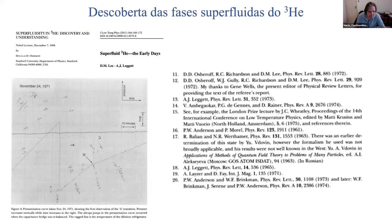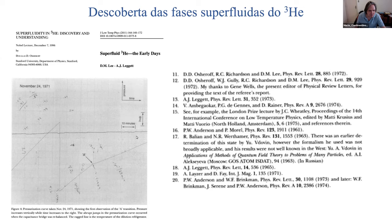Isso aqui é uma medida. A primeira vez que ele vê a fase A, tem um kink aqui na curva de pressurização. Ele tem pressão versus tempo, e esse kink aqui é a primeira evidência que ele vê de uma transição de fase — o Hélio quando você varia a pressão em função do tempo. Essa aqui é a descoberta da superfluidez do Hélio, está aqui nessa figura, na fase A.